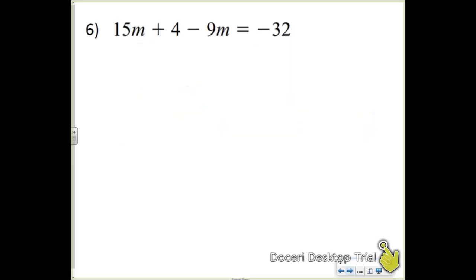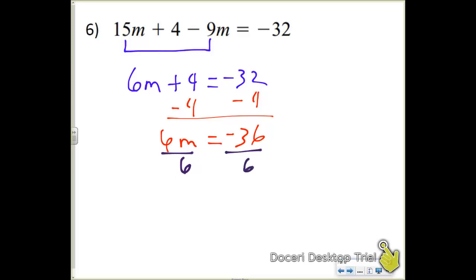Number 6. First thing we want to do is simplify both sides. So right now I have like terms of 15m and negative 9m. When I combine those together I end up with 6m plus 4 equals negative 32. And again the only thing I noticed here was some people were combining those wrong. Now it is a multi-step. So minus 4 from both sides. 6m is going to equal negative 36. Divide both sides by 6. And you have m by itself equaling a negative 6.